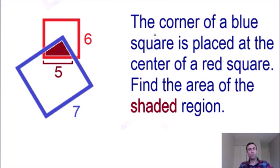In this problem we have a blue square, and the corner of the blue square is placed at the center of the red square. So this corner of this blue square which I just circled is placed at the center of the red square. And the goal for this math riddle is we need to find the area of the shaded region. So this shaded region which I colored in dark red, this is what we need to find.